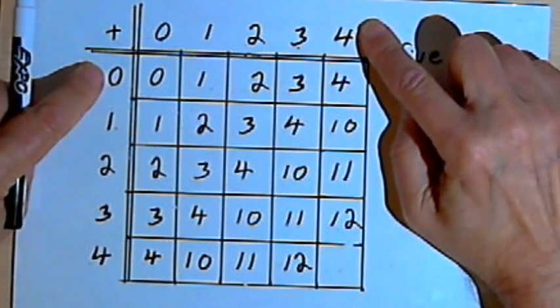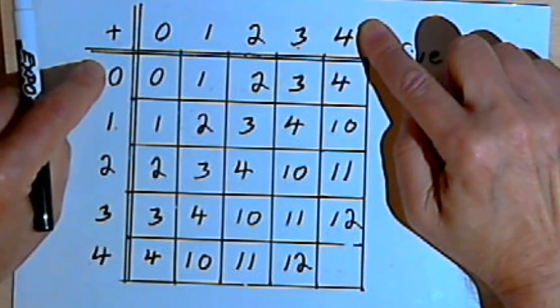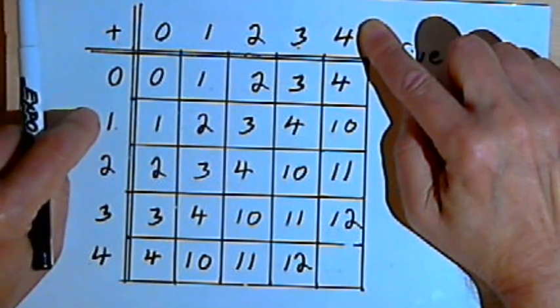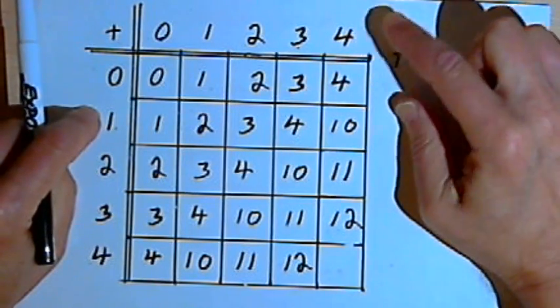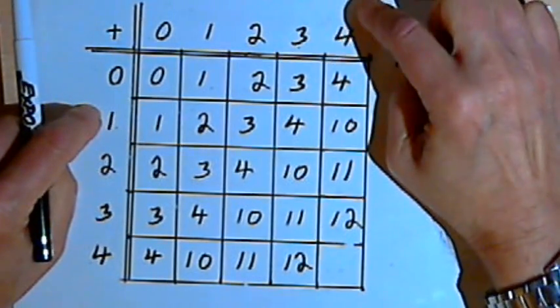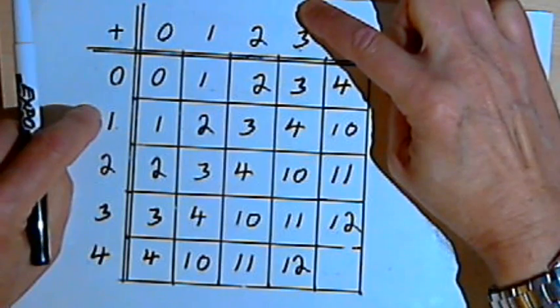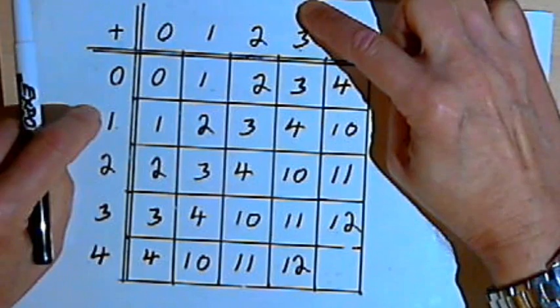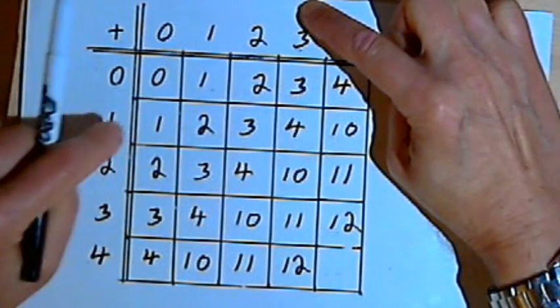Because look what's happening. When I add a 0 and a 4, I get a 4. If I increase the first number that I'm adding, the 0, if I increase it by 1, and decrease the other number, the 4, decrease it down to 3, then I should be getting the same thing. I'm decreasing one number and adding the other number. And I'm decreasing and adding by 1's. So 1 plus 3 is also going to be 4.